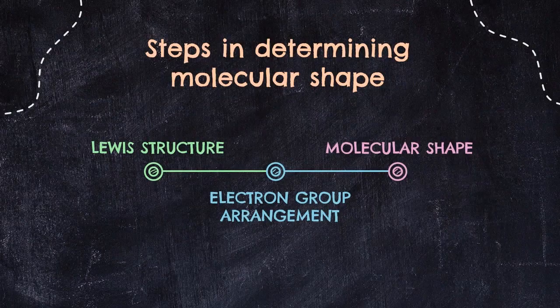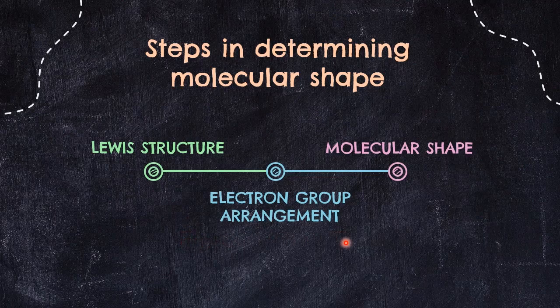Here is the checklist you need to follow before you can determine the shape of a molecule. Always start with a Lewis structure, then count how many electron groups are present. For this subtopic, you will check the electron group arrangement for only the central atom. But in 4.3, you will need to check all atoms to know the shape of the orbital. Finally, by applying VSEPR theory, you will determine the molecular shape.